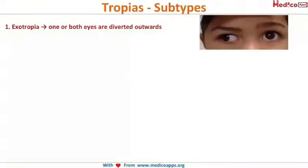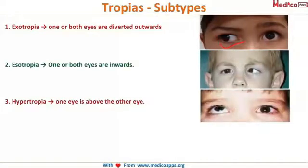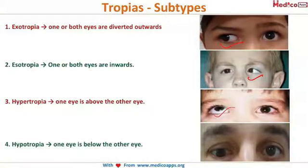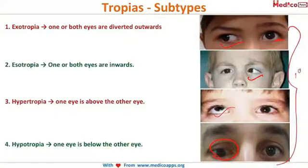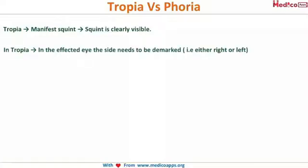In exotropia the eyeball moves outwards, in esotropia it moves inwards, in hypertropia upwards, and in hypotropia downwards. All of these are observed in the primary gaze, where the normal eye is in the primary position. The patient is looking straight ahead but there is deviation of the affected eye. In tropia, the squint is manifest and clearly visible.